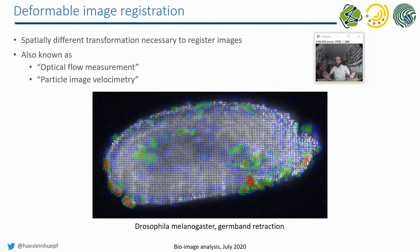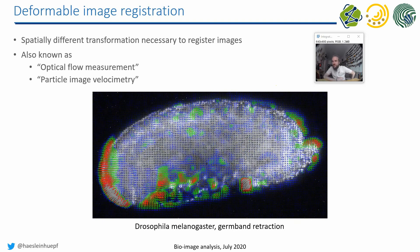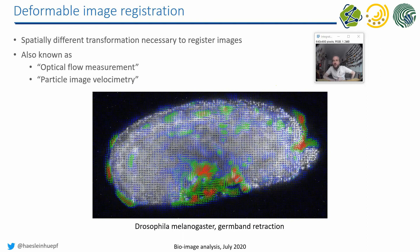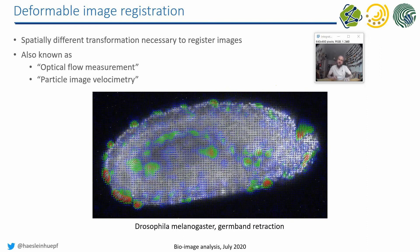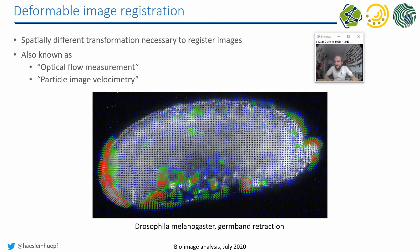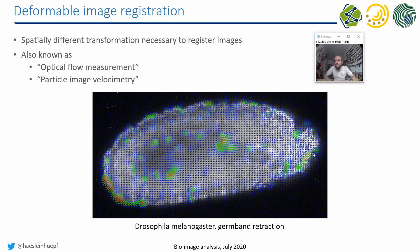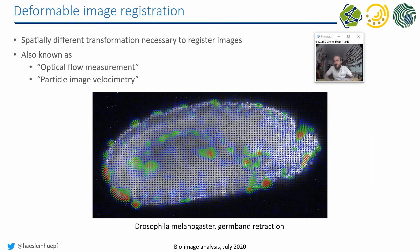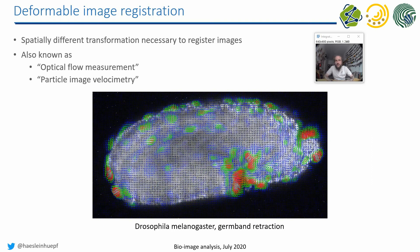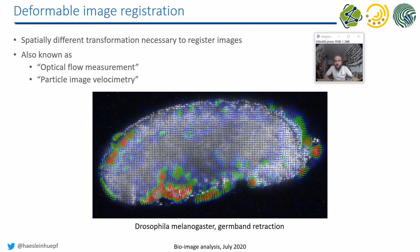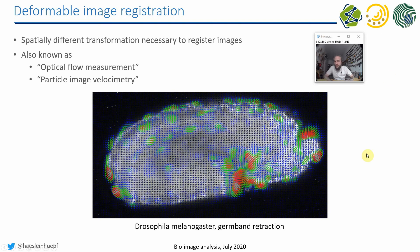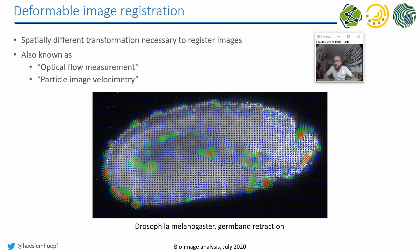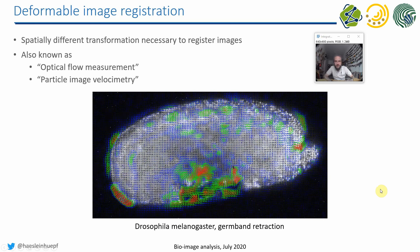We are not tracking individual objects or nuclei here — we are following the whole structure pixel by pixel and summarizing that in a visualization of the vector field. In microscopy, most people talk about optical flow measurement or particle image velocimetry; in medical imaging, people usually call it deformable image registration.